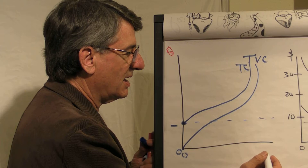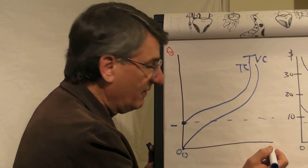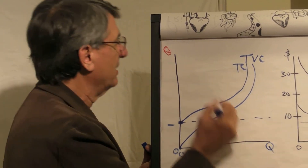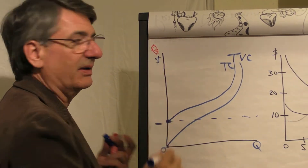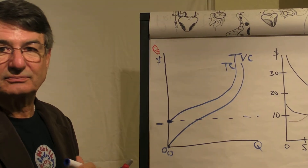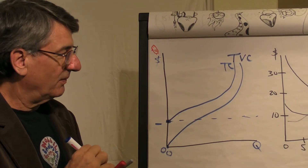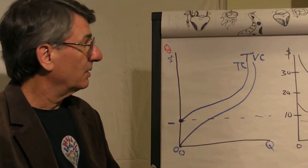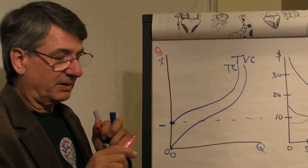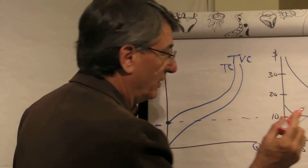And on the horizontal axis we have quantity produced; on the vertical axis we have dollars. I believe you have a parrot. Don't want to harm the parrot there.